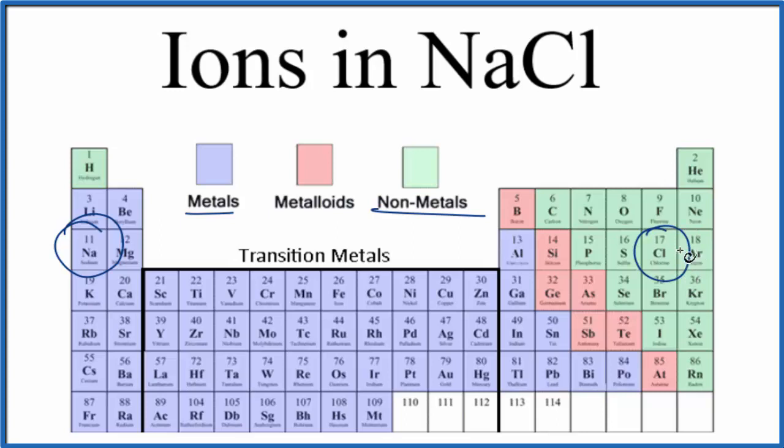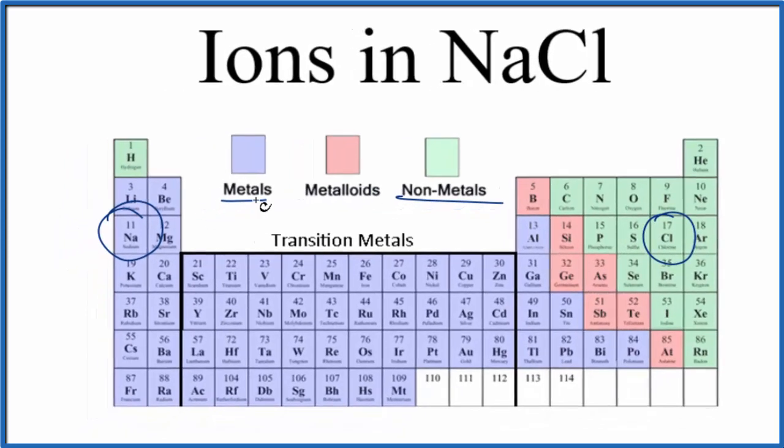And when we have that ionic bond, electrons are transferred from the metal to the nonmetal. So we'll have a positive charge here and a negative charge here. We'll have ions. Let's take a look at that.